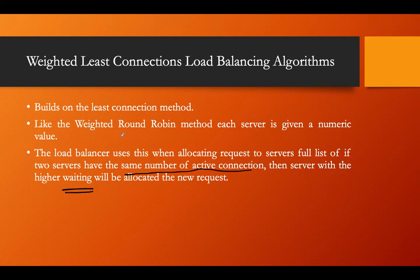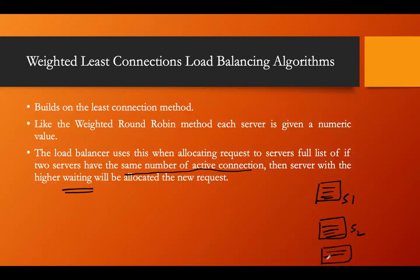The weight is given based on server capacity, similar to round robin. Let's say we have three servers: server one, server two, and server three. The weight given to server one is four, the weight given to server two is one, and the weight given to server three is two. The active requests are: server one has five, server two has seven, and server three has five.